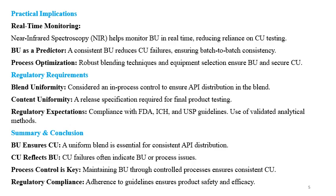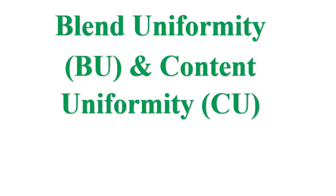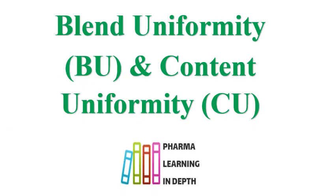Summary and conclusion for BU and CU: BU ensures CU — a uniform blend is essential for consistent API distribution. CU reflects BU — CU failures often indicate BU or in-process issues. Process control is important: maintaining BU through controlled processes ensures consistent CU. Regulatory compliance — adherence to guidelines ensures product safety and efficacy. Also, if the blend is held for a long time or handled improperly, then even though the blend was uniform, it can have an impact on CU.